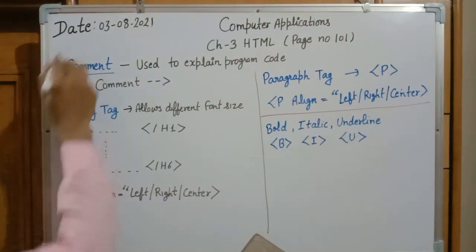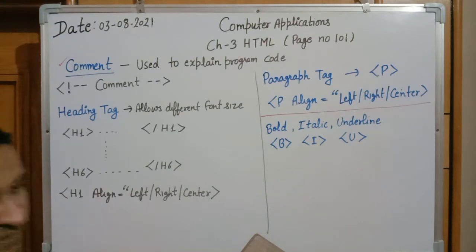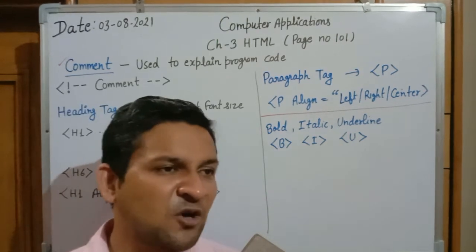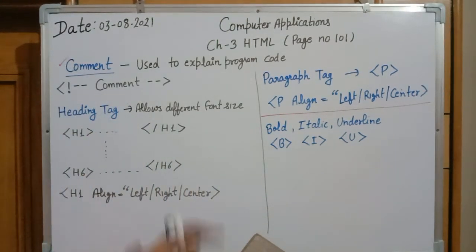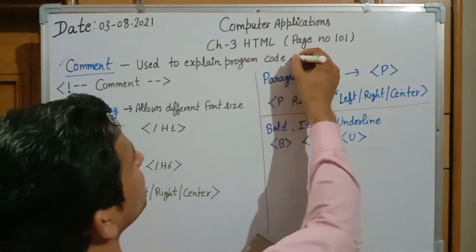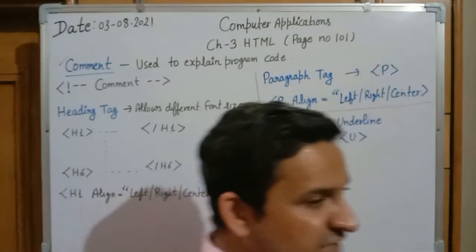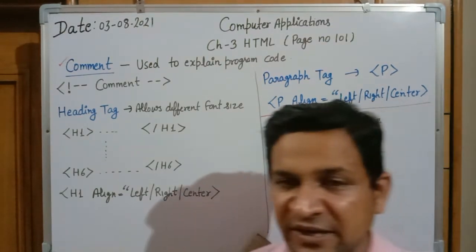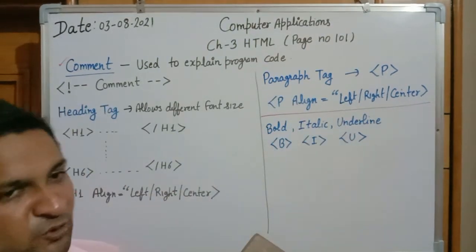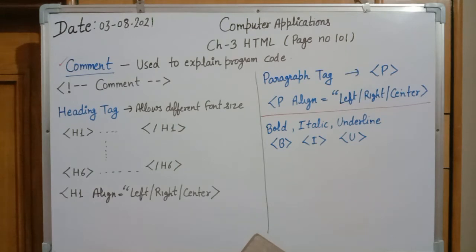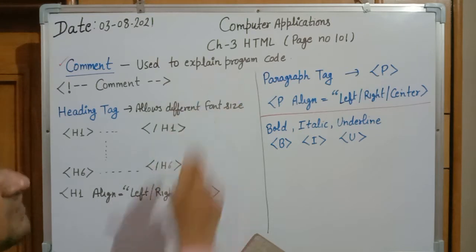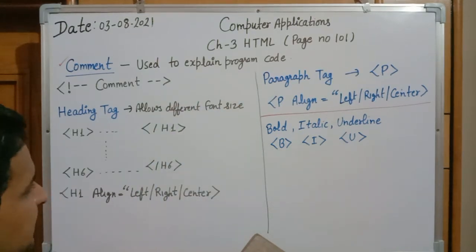We are going to start with the topic: comments. What is the meaning of comments? A comment is basically the external part of your program that will not affect the program output. It is an additional part written in the notepad program, and the purpose of writing a comment is to explain the programming code.